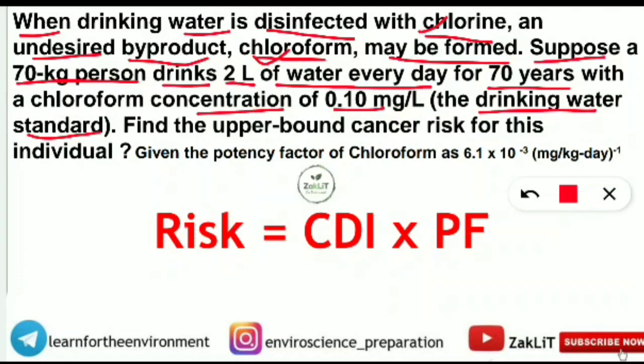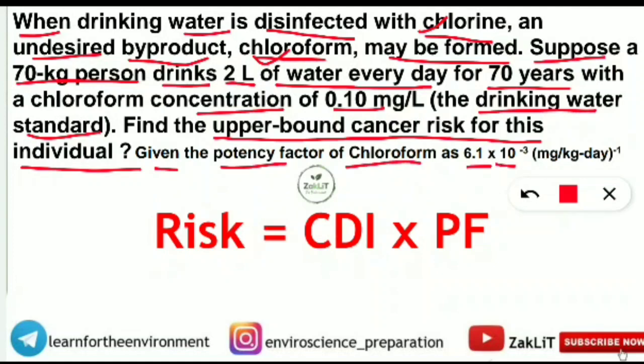The question asks us to find the upper bound cancer risk for this individual — that is, what is the probability that this person will get cancer from chloroform in the drinking water. The question gives us the potency factor of chloroform as 6.1 × 10⁻³ mg/kg·day inverse, which we will use shortly.